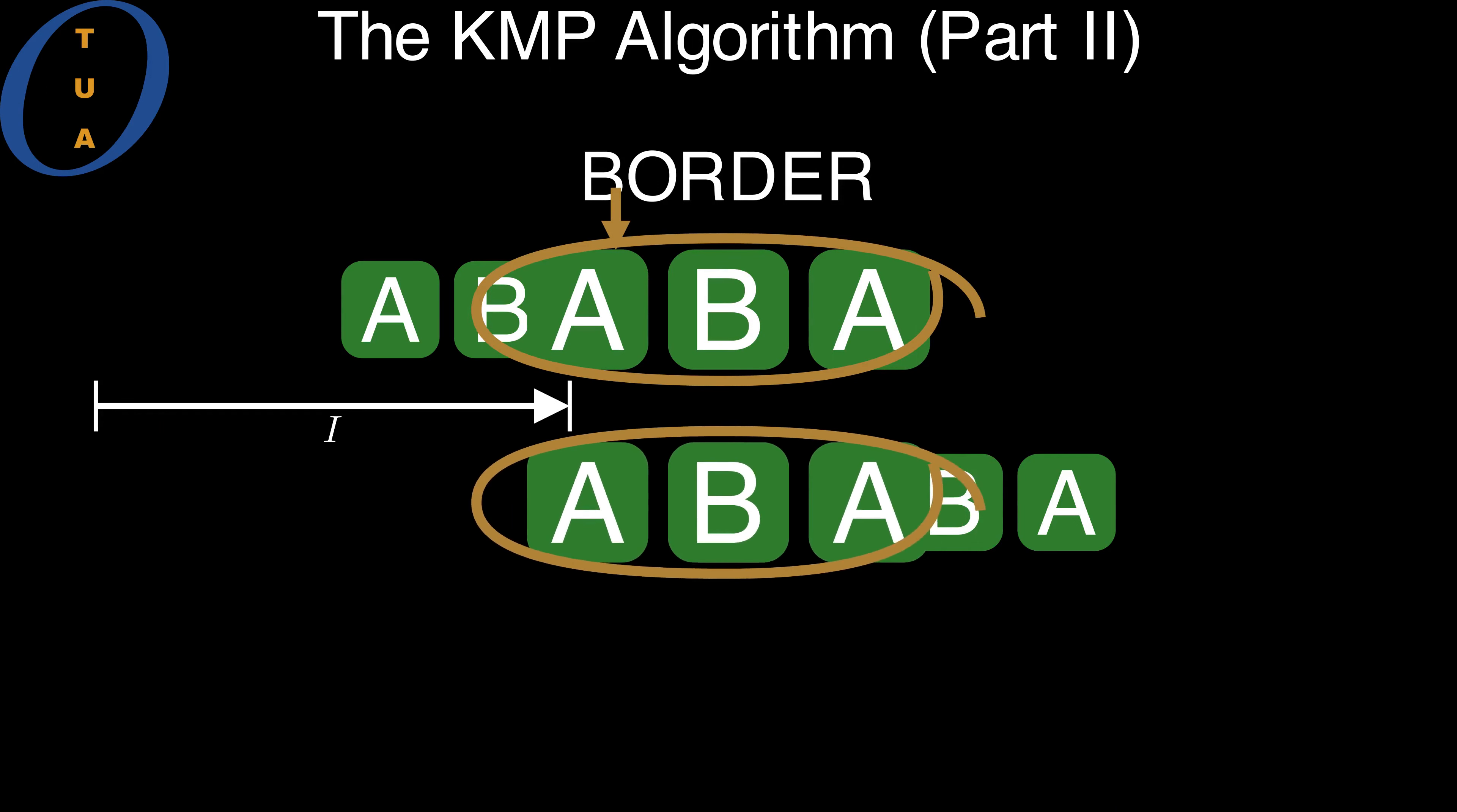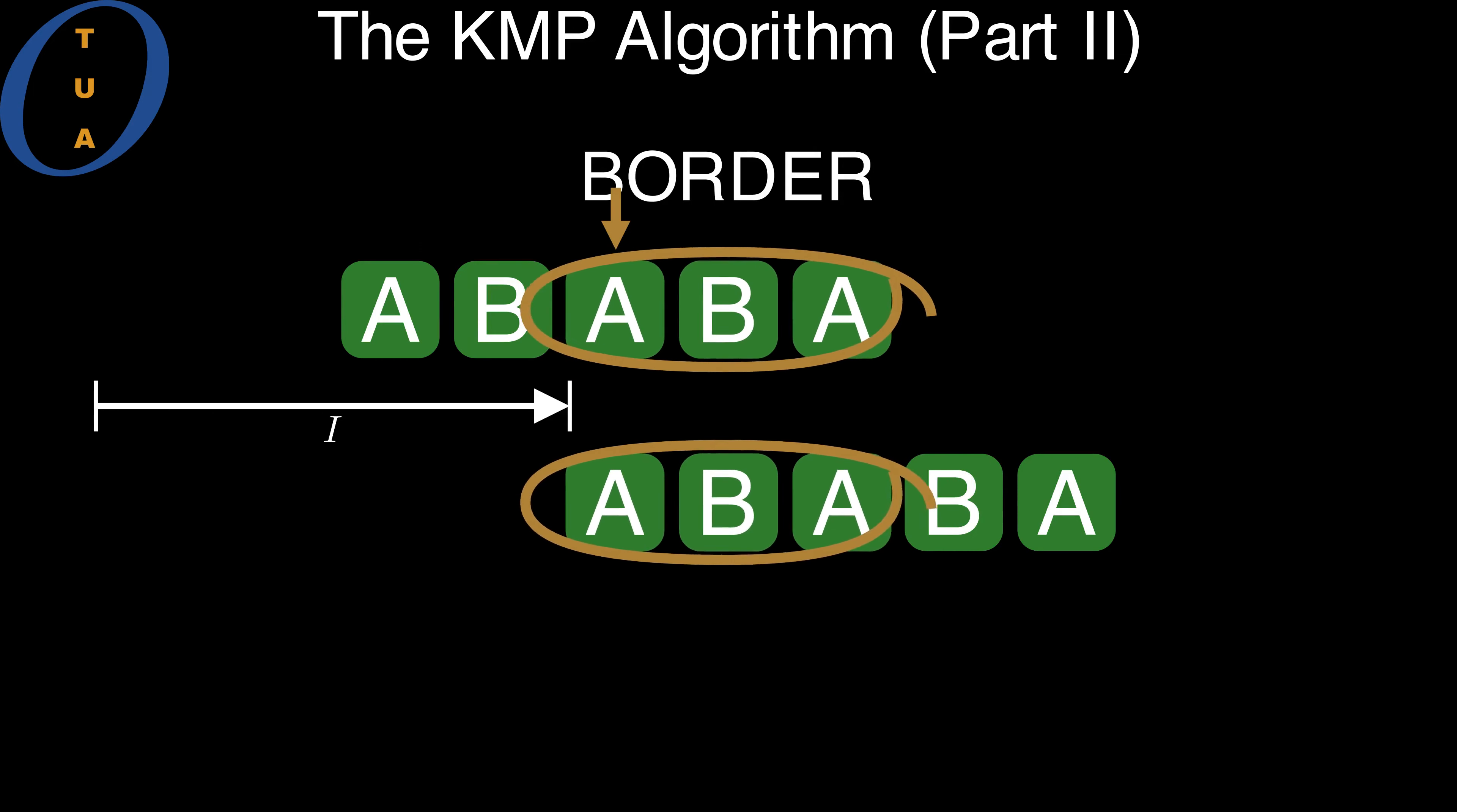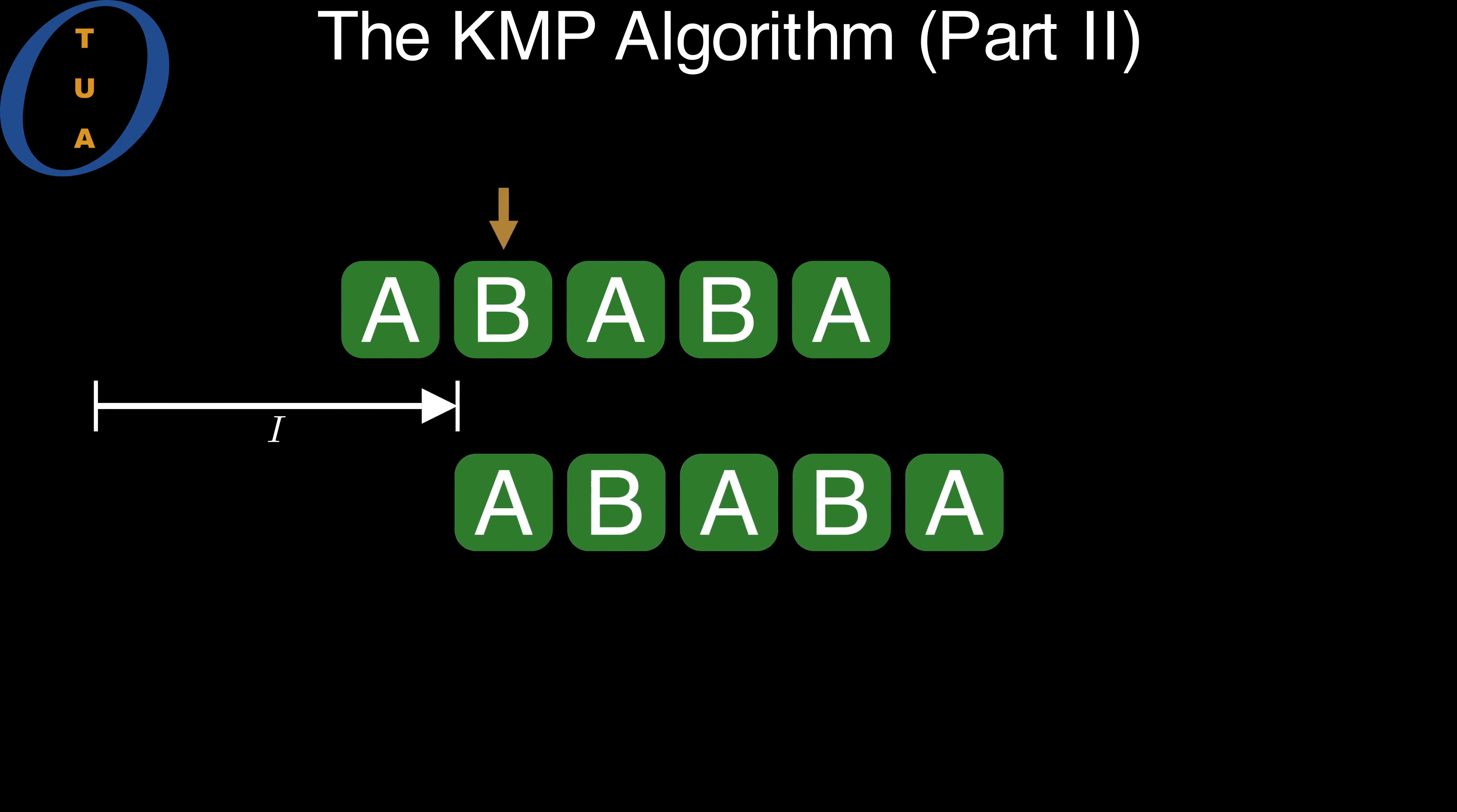In the offsets that we do skip, the known symbols that are aligned do not all match, and therefore do not form a border.